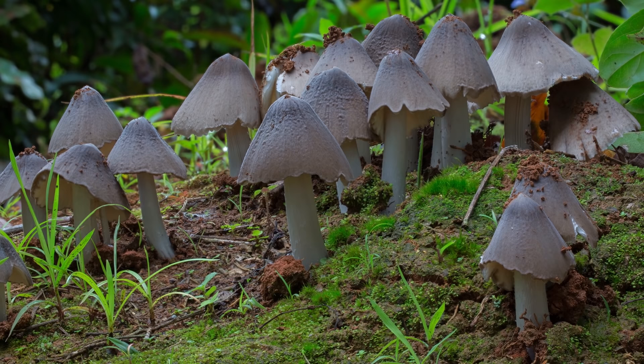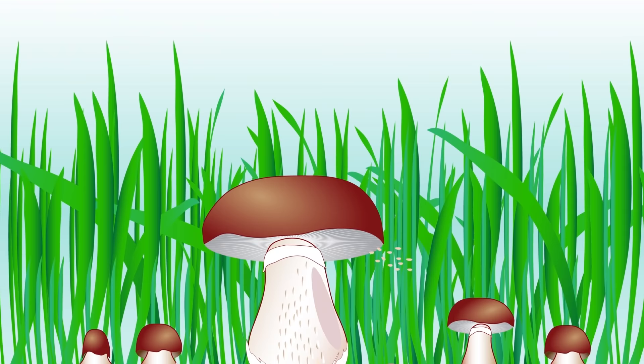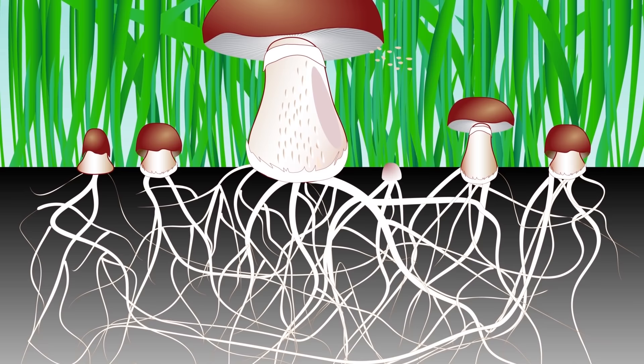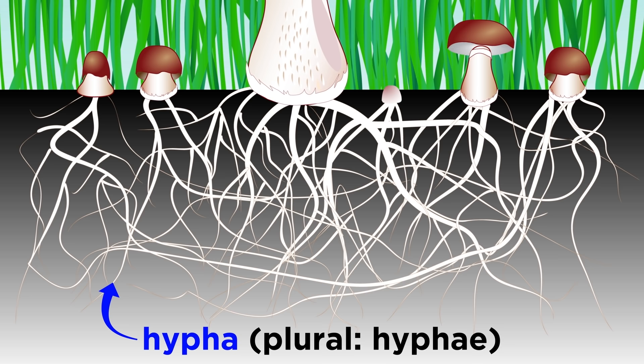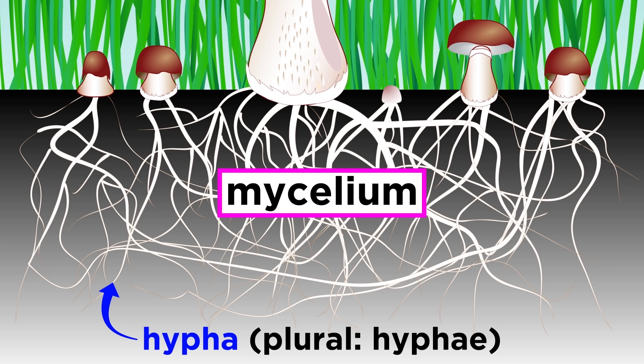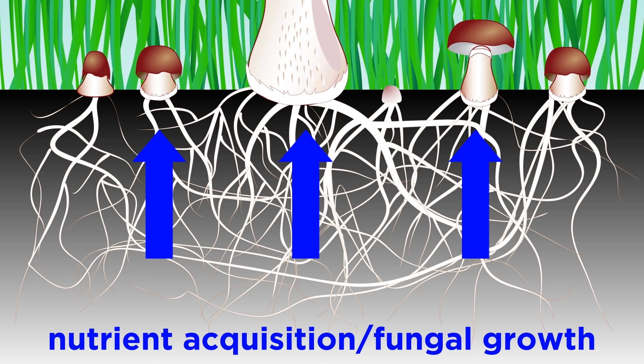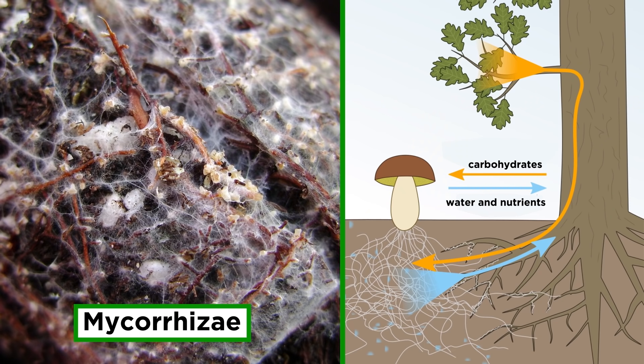When you see a mushroom in the wild, or even in a market, you are looking at the fruiting body, while you only see a small portion of the actual fungus. Underneath the soil, there is a filamentous network that supports the fungus. These filaments consist of thin fibers called hyphae, and the collective network of hyphae is known as the mycelium. The mycelium allows for nutrient acquisition, growth of the fungus, and production of the fruiting body.